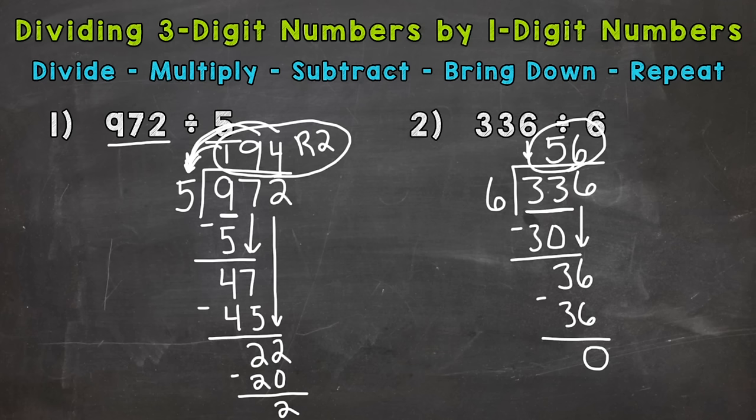So some of the differences here between number one and number two. Number one, we had a remainder. And we were able to take a look at our first number in the dividend and divide. In number two, we had to take a look at 33 and hop over a place because the first digit there we were not able to divide it by our divisor. So a couple of differences there, but overall, we use the same process here.